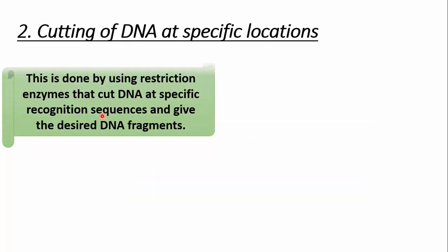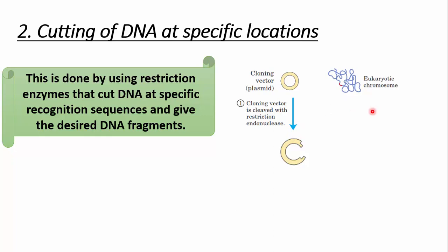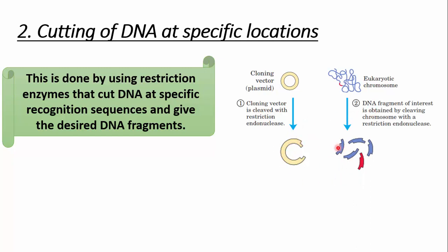Next, we cut our DNA at specific locations using restriction enzymes. Restriction enzymes cut DNA at precise locations, and these reactions are known as restriction enzyme digestions. We cut our cloning vector with a restriction enzyme, and then use the same restriction enzyme to cut our desired gene of interest. Using the same restriction enzyme produces the same sticky ends, which can then be easily ligated to form a recombinant DNA molecule.